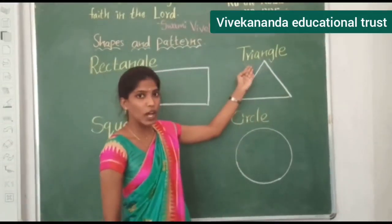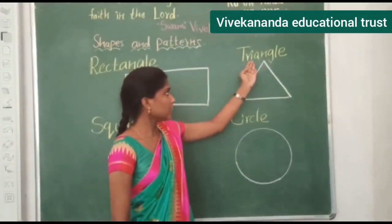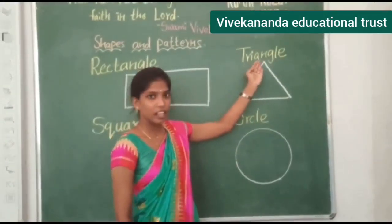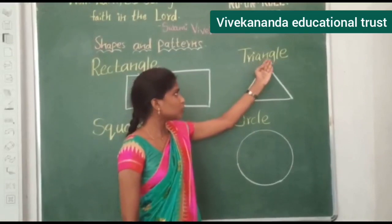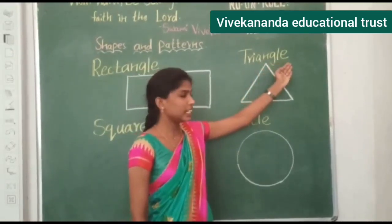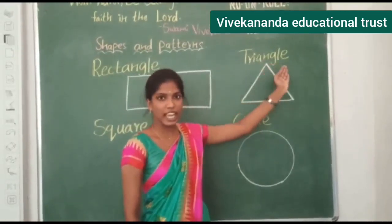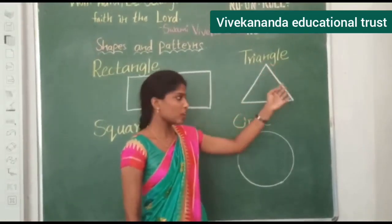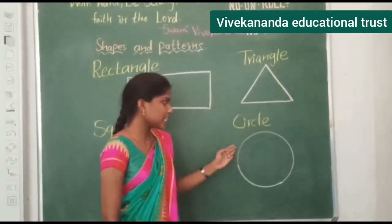Three sides and three corners. Can you spell the triangle? T-R-I-A-N-G-L-E. Triangle.